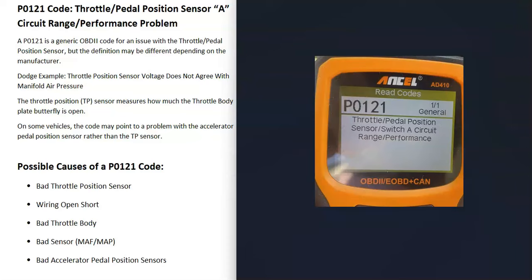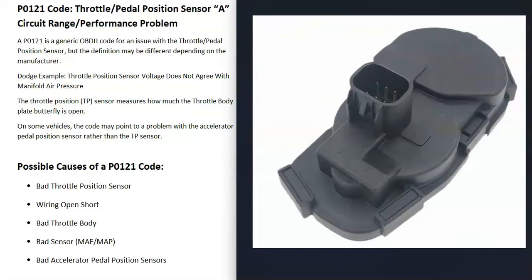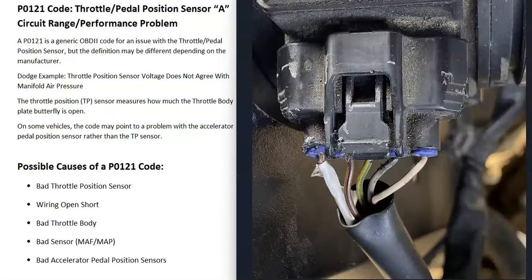What would be some possible causes of a P0-121 code? The first thing that could cause this, and a very common one, is that the throttle position sensor has just gone bad and needs to be replaced. You can test these if you want to — I made a video on that and I'll put a link below if you need to check that out.